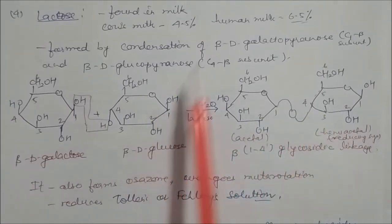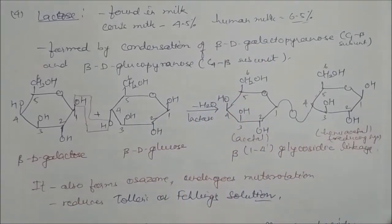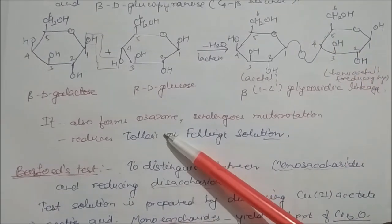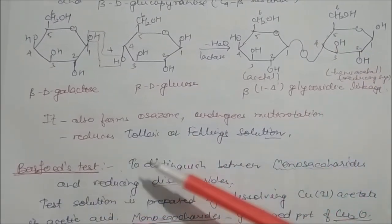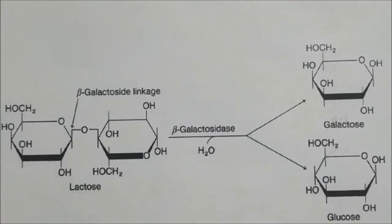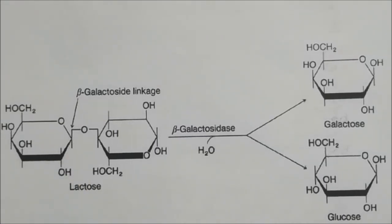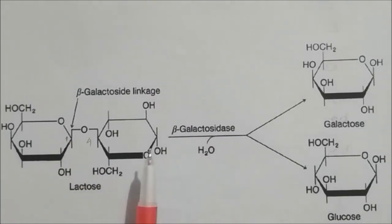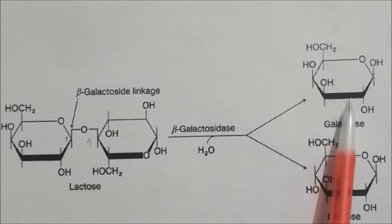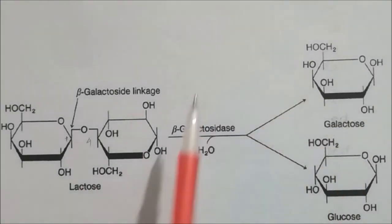Lactose has a beta-1,4-glycosidic linkage — the same as cellobiose but different monosaccharides (galactose + glucose vs glucose + glucose). Since one end is hemiacetal, lactose is a reducing sugar; it can form osazones, undergo mutarotation, and reduce Tollens' and Fehling's solutions. On hydrolysis, lactose gives beta-D-glucose and beta-D-galactose; condensation of these two gives lactose back.